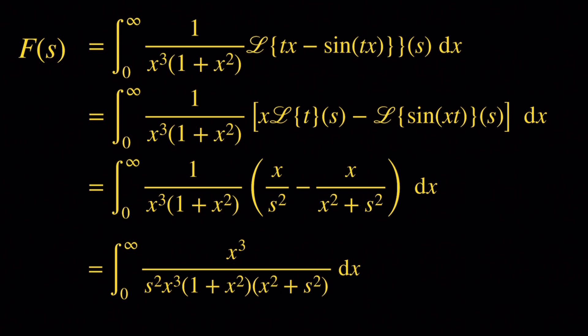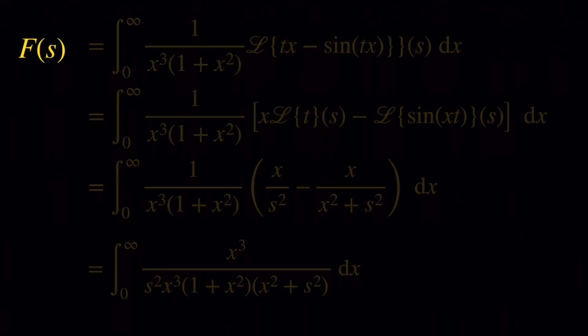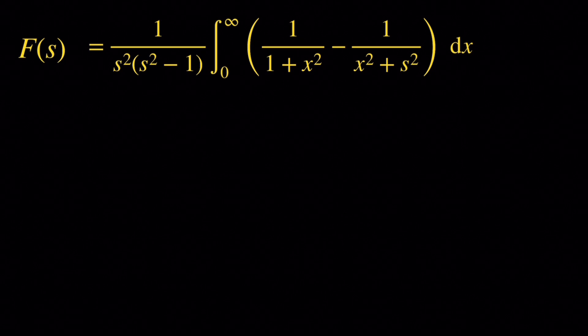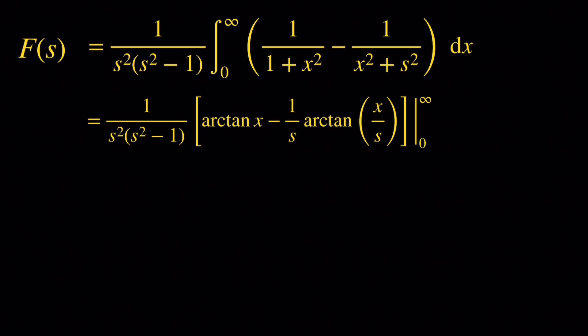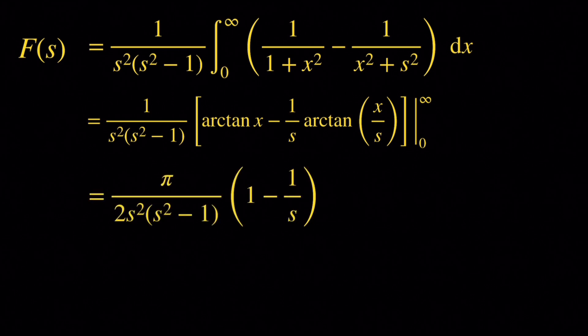Now we're going to make a partial fraction decomposition. After the partial fraction decomposition, we get the following expression. Taking the integral, we're just going to get arctangents: 1 over s squared times s squared minus 1 times arctangent of x, minus 1 over s times arctangent of x over s, evaluated between 0 and infinity. For x equals 0 we just get 0, so we take the limit as x approaches infinity. The limit of arctangent at infinity is pi over 2, so we get pi over 2 times s squared times s squared minus 1 times 1 minus 1 over s. Writing 1 minus 1 over s as s minus 1 over s, and s squared minus 1 as s minus 1 times s plus 1, we cancel s minus 1 and end up with pi over 2s cubed times s plus 1.